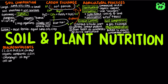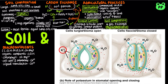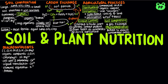Calcium cation is important in the formation and stability of cell walls and the maintenance of membrane structure and permeability, and is also central to many signal transduction pathways. Potassium cation plays an important role in stomatal regulation. Nitrogen and sulfur are important components of proteins, and nitrogen and phosphorus are important components of nucleic acids. Nitrogen, potassium, calcium, magnesium, phosphorus, and sulfur can also function as cofactors.